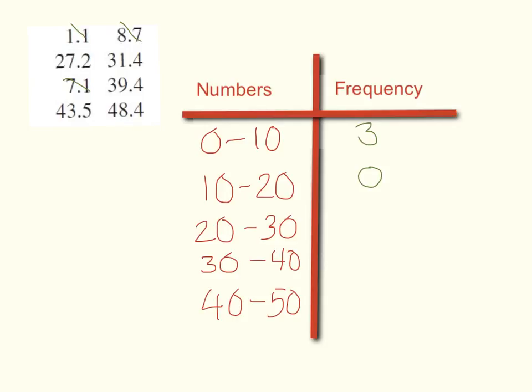How many between 20 and 30? Just 1. My frequency is 1. How many between 30 and 40? I've got 2 here. So the frequency is 2.